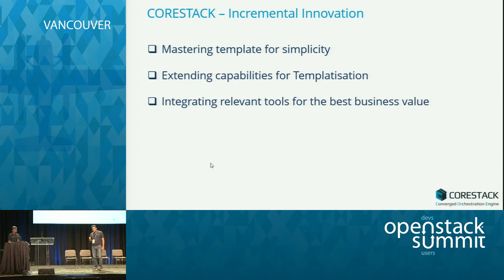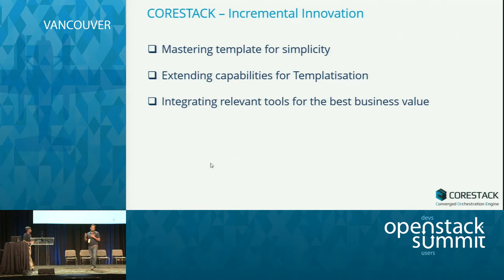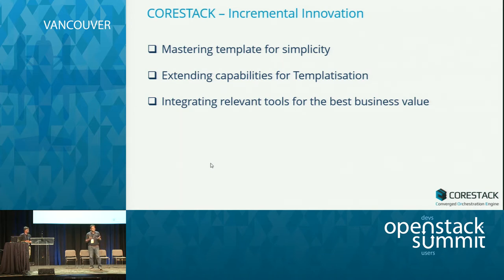Secondly, extending capabilities for templatization. Today HEAT has certain capabilities — we have extended them to orchestrate multiple clouds. Similarly in Mistral, we have extended its capability to talk to Puppet and Chef, and we can extend it as the product matures. Third, integrating relevant tools for the best business value. In any IT landscape you'll have your own set of tools. We are not there to replace any tools — we are trying to coexist with them, integrate and use them for the best value.